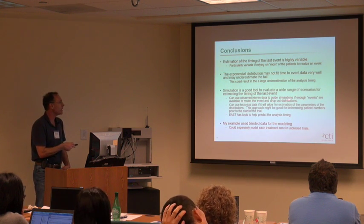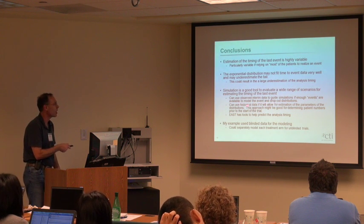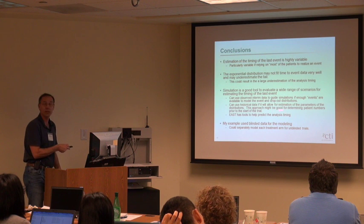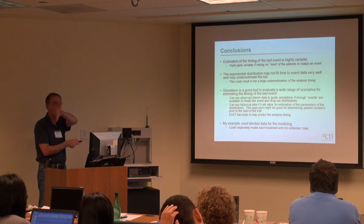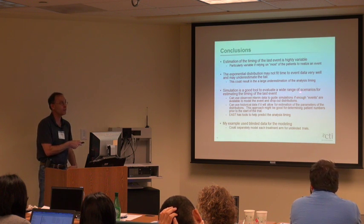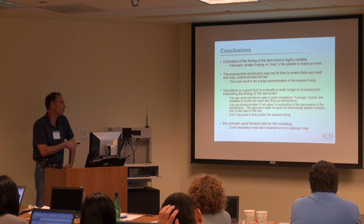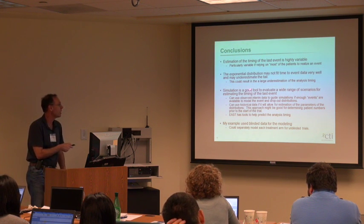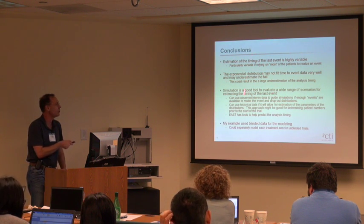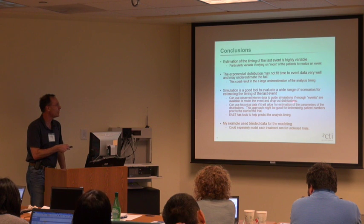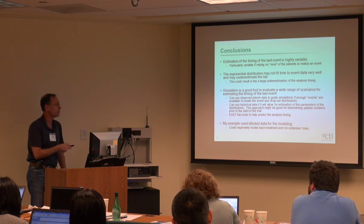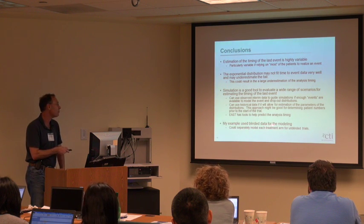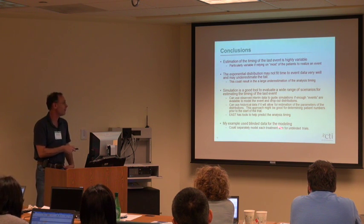We can use observed interim data to guide the simulations if enough events are available to model the data, or use historical data. Often the problem is that we only know the median for the control arm, so you have to use the exponential — but once you obtain some data, you can use this method. I know EAST is implementing some tools to help with this. In my example I used blinded data for the modeling, but you could separately model each treatment arm for unblinded data.